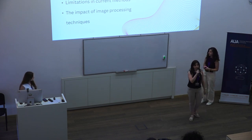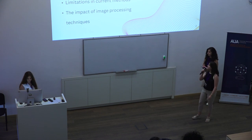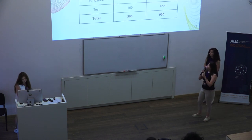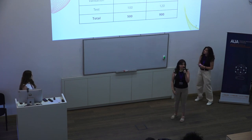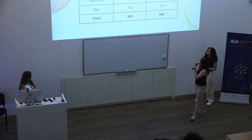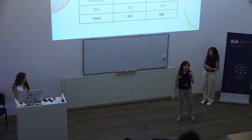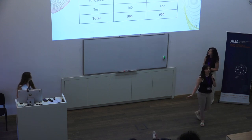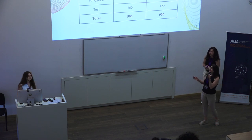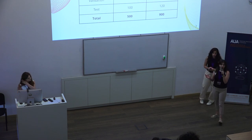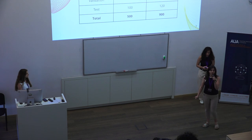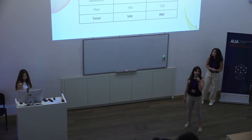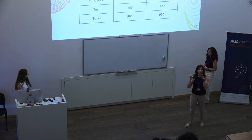Now let's understand what kind of data we used. We used the RibFrac dataset, which originally has 900 CT scans — 720 designed for training, 60 for validation, and 120 for test. But as this dataset was designed for competition, we only had access to 500 publicly available CT scans. So we decided to divide those 500 by a ratio of 70 to 10 to 20 for training, validation, and testing.